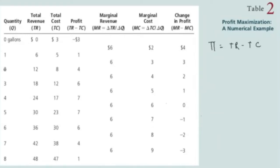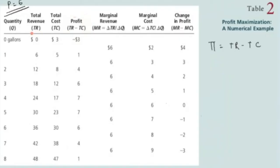The first column is quantity, the second is total revenue assuming price equals six, the third is total cost which is given. The important column is profit, which is total revenue minus total cost. At zero units of quantity, total revenue is obviously zero because you produce nothing, so you have no revenue. But you still have a cost component, primarily fixed cost, so your profit will be total revenue minus total cost, which gives a negative value.